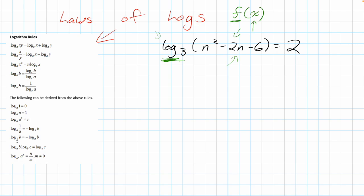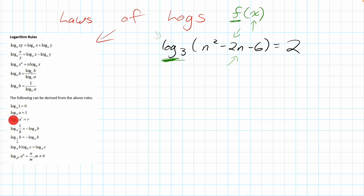We're going to simplify this. Looking at the left-hand side, there's a log on one side and nothing on the other, so it gets tricky. I need to figure out a way of getting rid of the log, and there's a nice opposite operation. Going down the list, it says: log base a of (a to the power R) is just R.